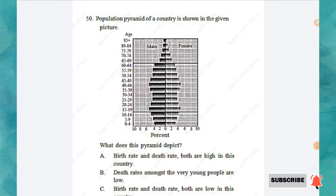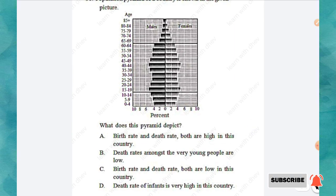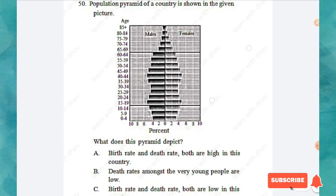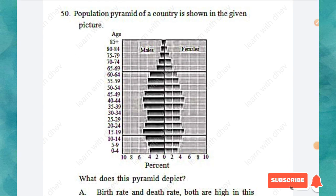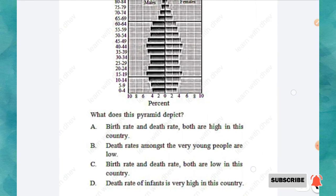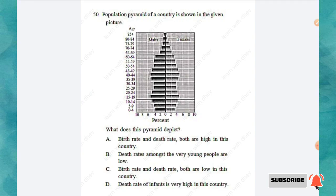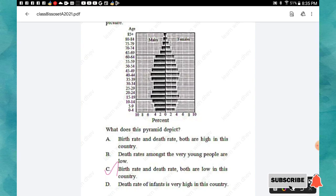Question 50: A population pyramid of a country is shown in the given picture. What does this pyramid depict? Option A: Birth rate and death rate are both high. Option B: Death rates among the very young are low. Option C: Birth rate and death rate are both low. Option D: Death rate of infants is very high. The right answer is option C: birth rate and death rate are both low in this country. Hope you all liked this video — thanks for watching.